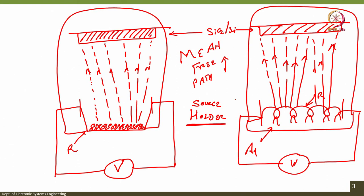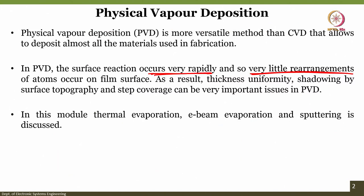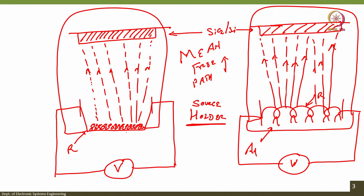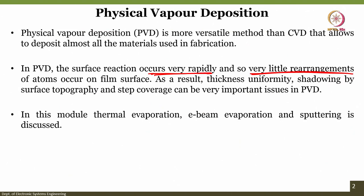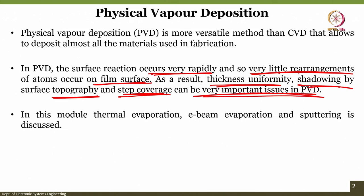Because the source material — in this case aluminum — melts and evaporates so rapidly, the thin layer that forms on the substrate forms so fast that there is very little time for rearrangement of atoms. This deposition occurs so fast that atoms do not have time to rearrange themselves. As a result, thickness uniformity, shadowing by surface topography, and step coverage can be very important issues in PVD.